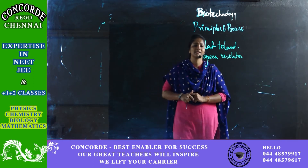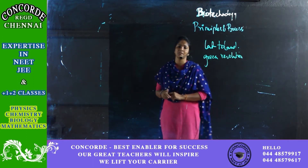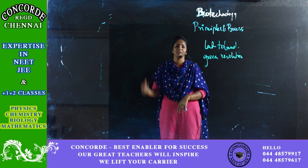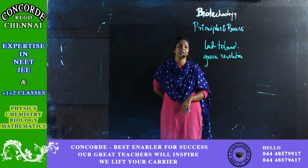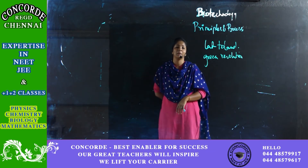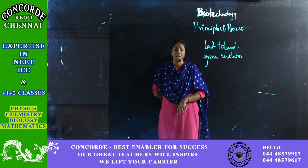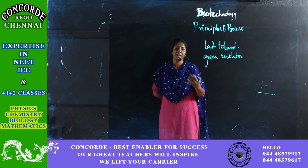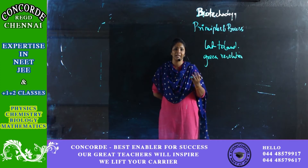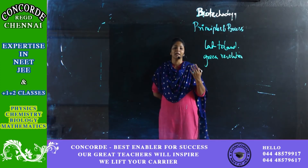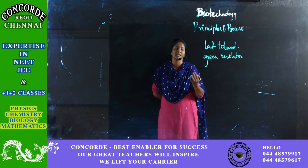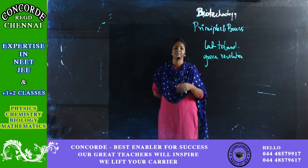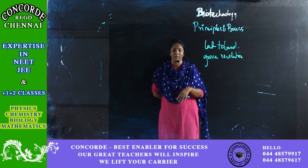Blue revolution is changes or revolution happening in your aquatic habitat. White revolution is a revolution in your dairy farming, poultry, etc. Red revolution is a revolution in meat, and green revolution is a revolution in plants.